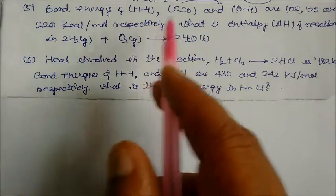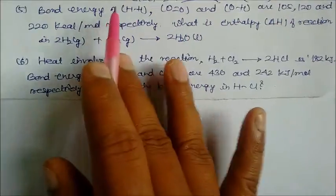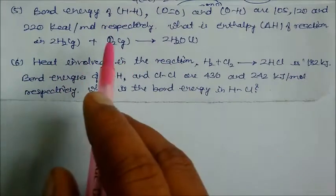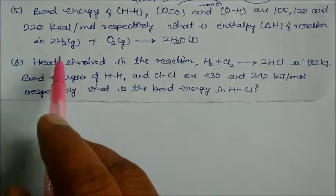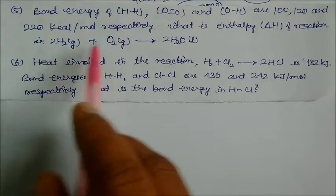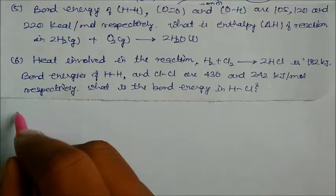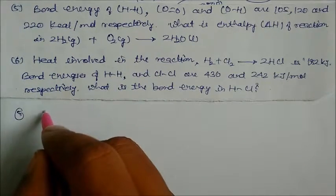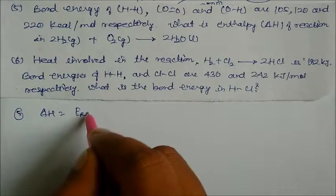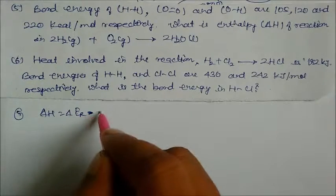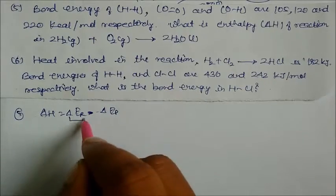Question 5: bond energy of H-H, O-O, and O-H are 105, 120, and 220 kilocalorie per mole respectively. What is the enthalpy of reaction for 2H₂ + O₂ → 2H₂O? Delta H = total energy of reactants minus total energy of products. We apply this formula.